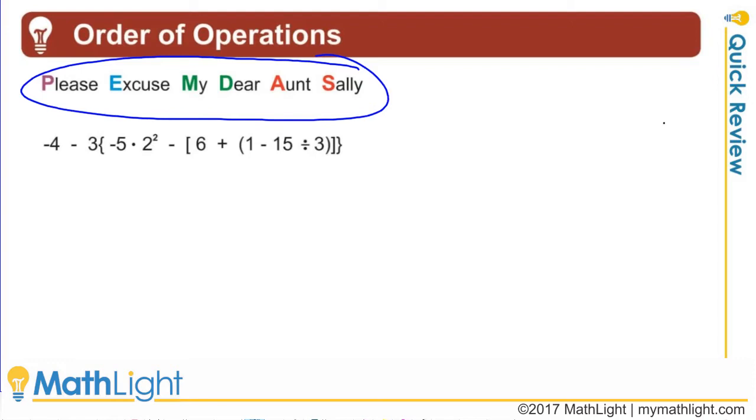So the P is parentheses. If they're there, you got to go into parentheses first. E is exponents. M is multiplication from left to right. D division from left to right. So as you work left to right, look for any multiplication or division. Take those next.